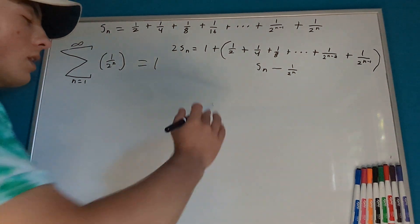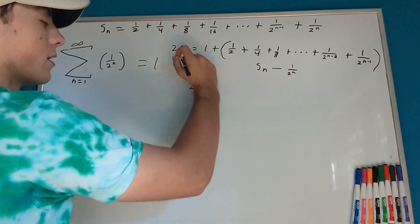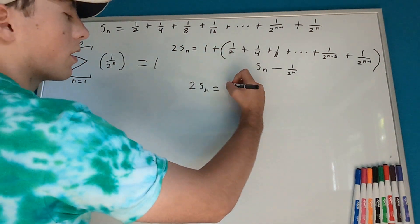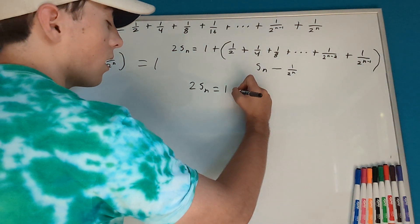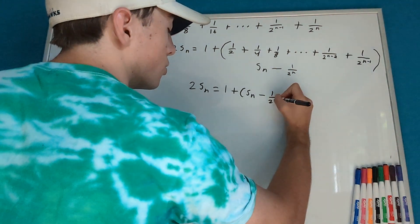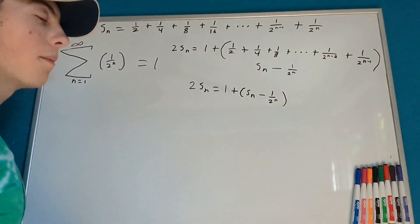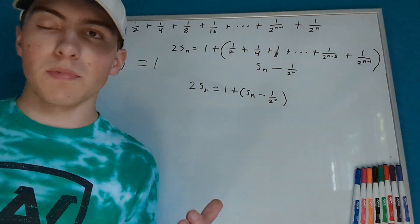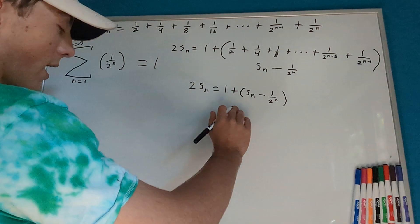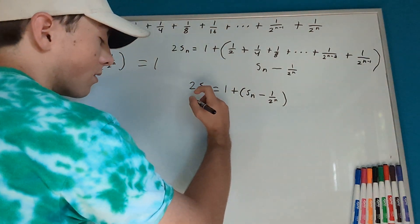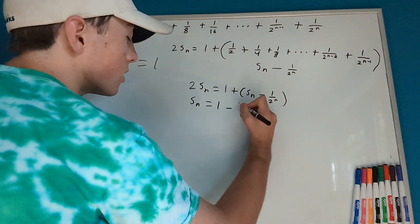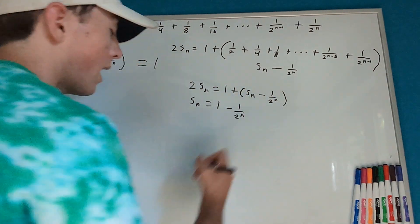So, then we can rewrite this entire thing, bring down the 2s_n, 2s_n equals, well, we already have that 1 plus s_n minus 1 over 2 to the n. Well, on both sides here, we can simplify this a little bit further. We can subtract an s_n on each side. So, that leaves us s_n equals 1 minus 1 over 2 to the n.